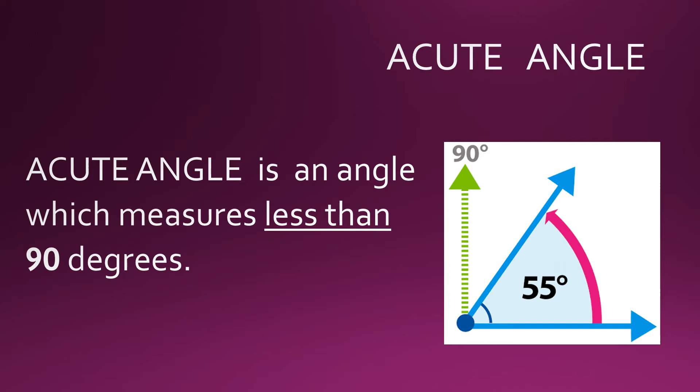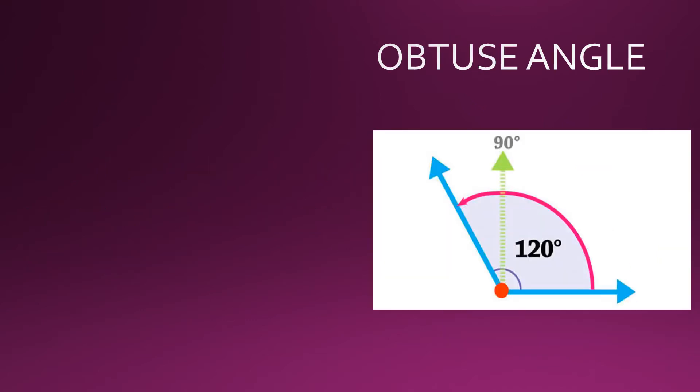In this figure alongside, you can see the angle is measuring 55 degrees, which means it is less than 90 degrees, and so this is an acute angle. This is how an acute angle looks.